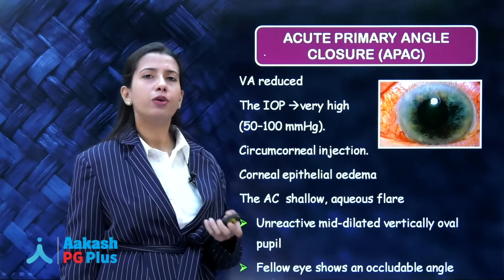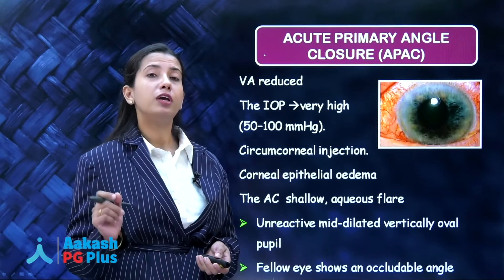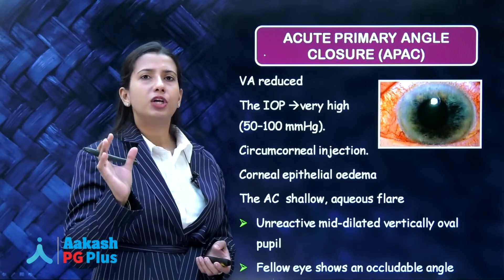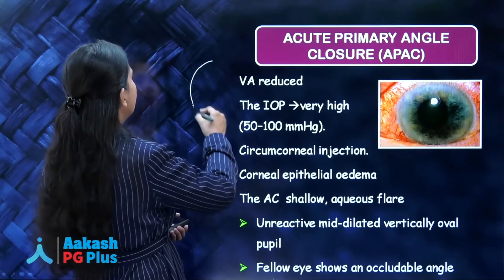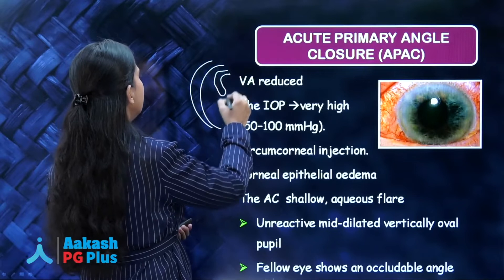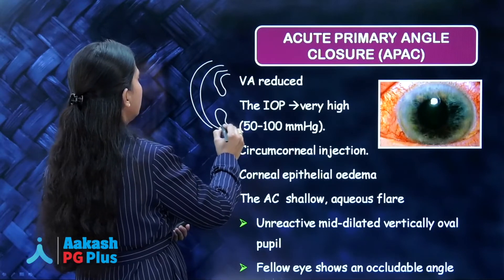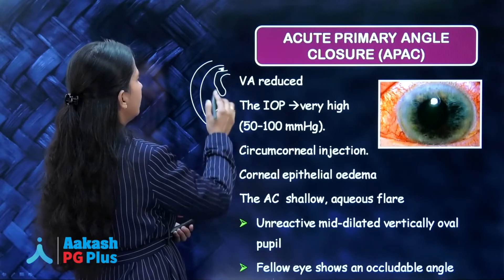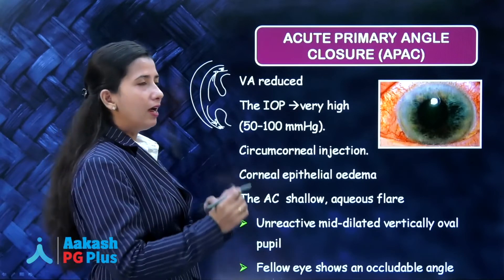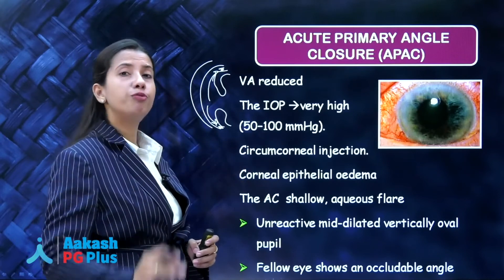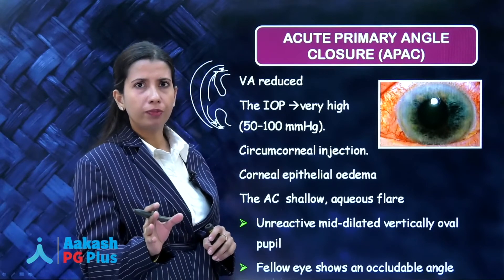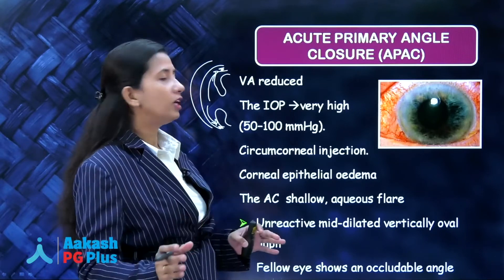Acute congestive glaucoma or acute angle closure glaucoma is one of the ocular emergencies. In these patients, the angle of the anterior chamber is shallow. When the pupil dilates, the iris comes forward and blocks this angle. Because of this, the aqueous humor which was supposed to drain is not able to, and the pressure increases — it may go up to 50 to 60 mmHg. Because of that much high pressure, the patient will have severe pain.